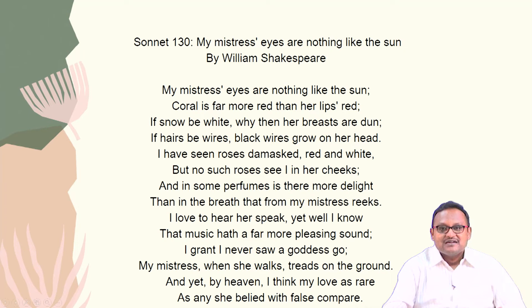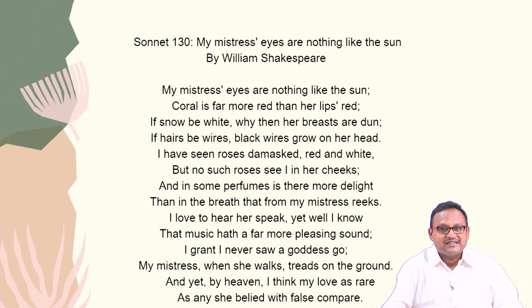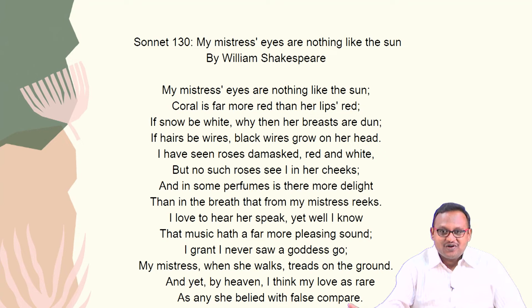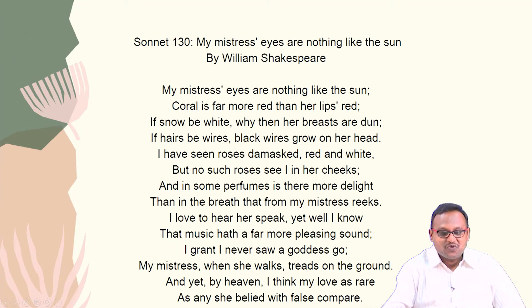From Shakespeare's Sonnet 18, there is another sonnet — Sonnet 130 — which is dense in the sense that it makes use of dense similes. If there is one poem that stands out for using simile as direct comparison, it is this one. 'My mistress' eyes are nothing like the sun; coral is far more red than her lips' red.' He goes on directly comparing the dark lady to natural objects. This poem exemplifies the use of simile.